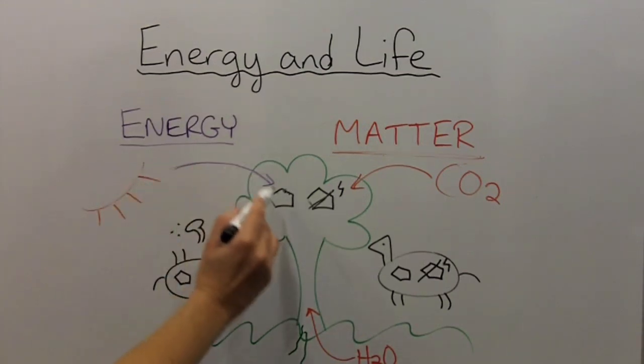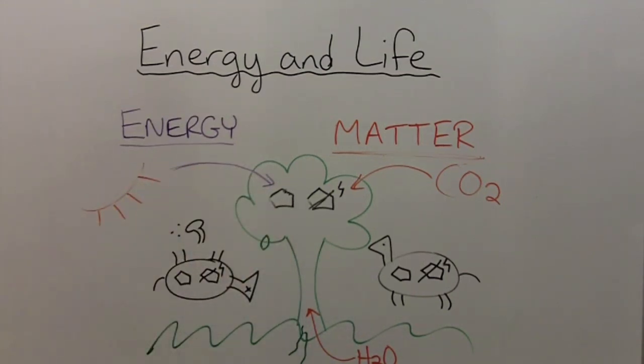When plants make glucose by photosynthesis, it's like putting food in the fridge. The energy is still trapped inside the molecules of glucose. In order to get the energy, the plants have to eat the food. That is, they have to break apart the chemical bonds through the process of respiration. Only then can plants use the energy that they have stored.